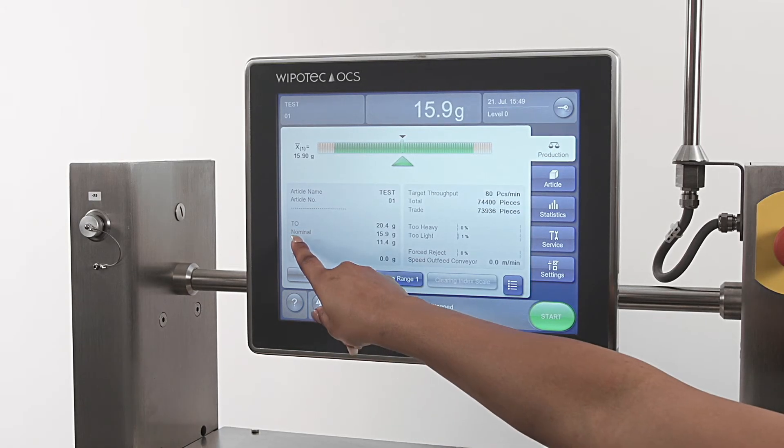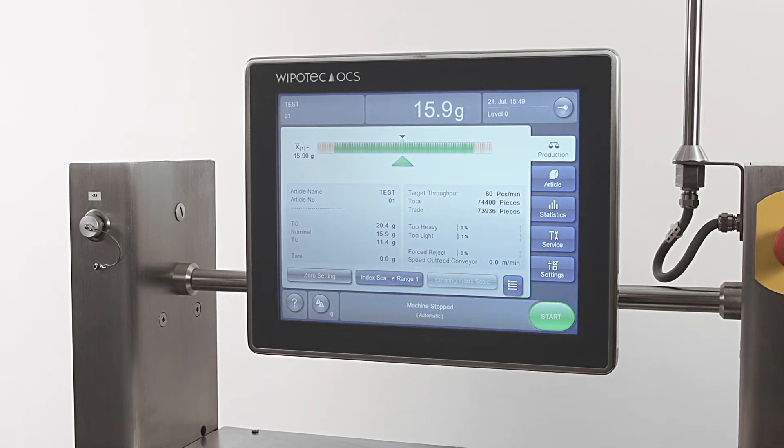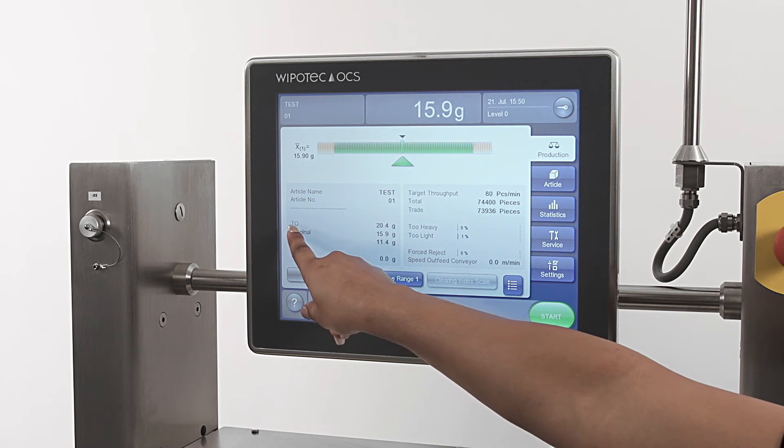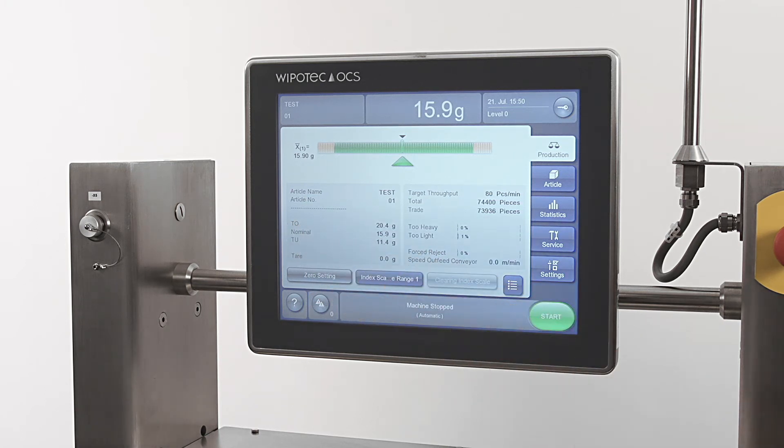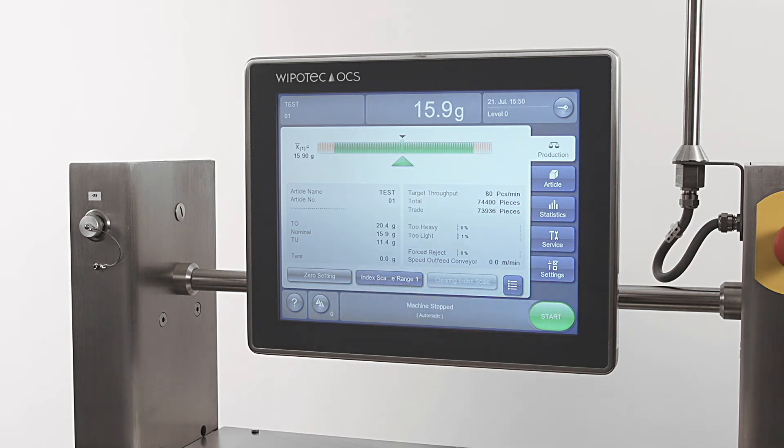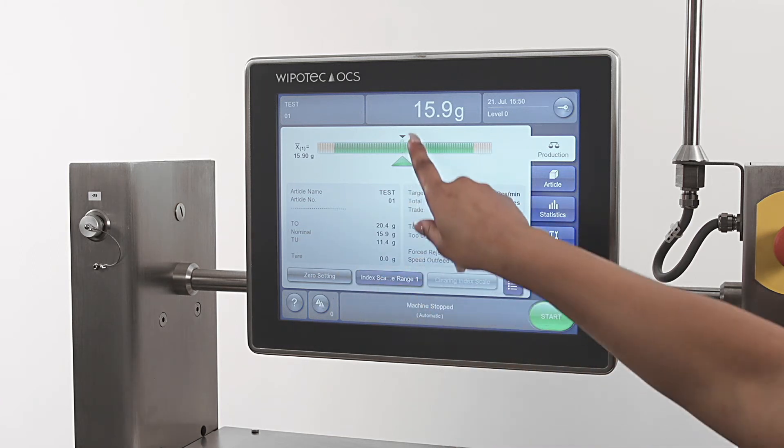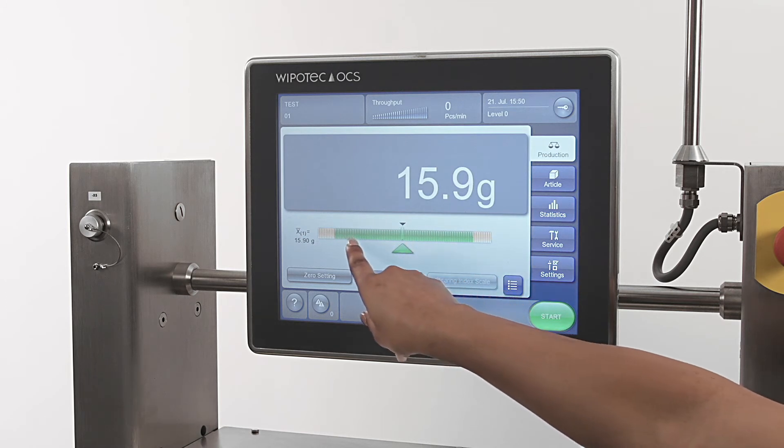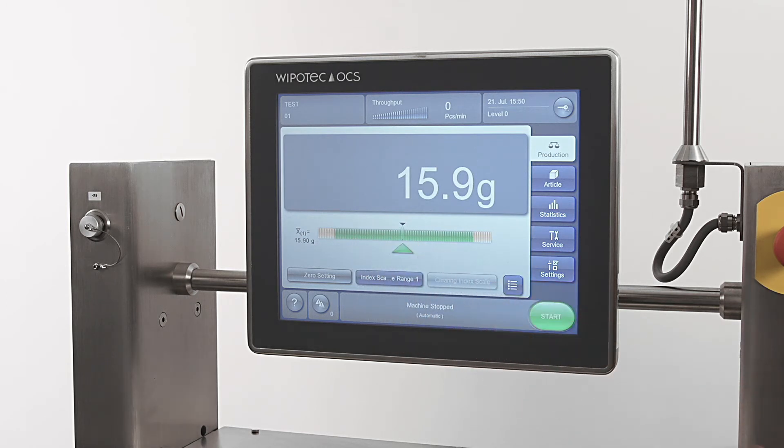Here we have an article that is our product to be weighed set up for a target weight of 15.9 grams. In this case we will accept weights up to 20.4 grams and down to 11.4 grams. All of these settings are configurable. The capture weight of this article is displayed at the top of the screen, and if everything is within tolerance the product or article weights will fall within this green area.